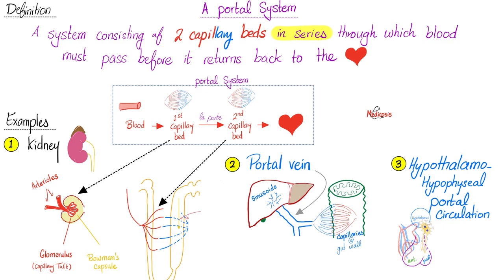The kidney is an example of a portal system. Why? Because we have two sets of capillaries connected in series with la porta between them. Here is the first set of capillaries, known as the glomerular capillary tuft. Here is the second set of capillaries, the peritubular capillaries. What's connecting the two together? La porta here is the efferent arteriole.